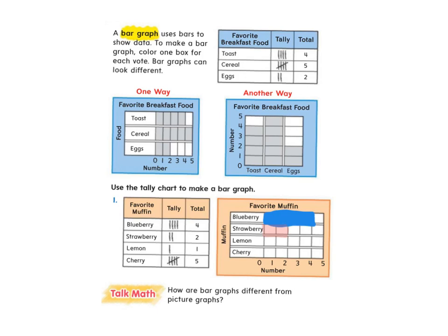Lemon. Let's look at lemon. So one person likes lemon. So I'm only going to draw in one lemon box. And I see that my bar is even with the number one. Okay. It's a little to the left, but that's okay.